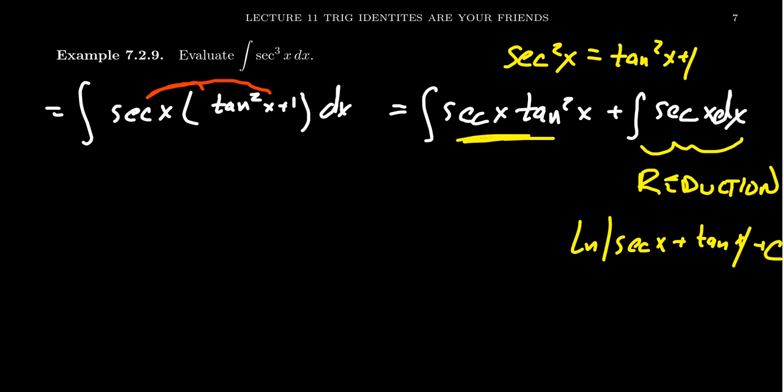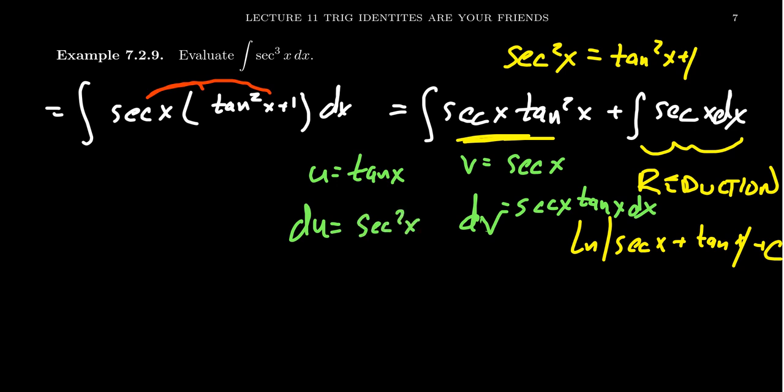What we have to do instead is employ integration by parts, because the secant x dx is a good choice for du. But the thing is, we don't want it to be a du, we want that to be a dv. So we want dv to be secant x tangent x dx. That way its antiderivative is fairly simple, it's a secant x. But then that would force that u should be tangent x, for which then du would equal secant squared x dx.